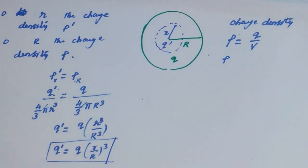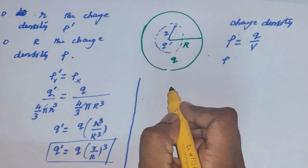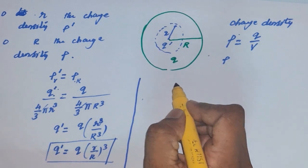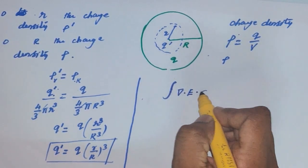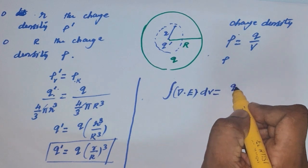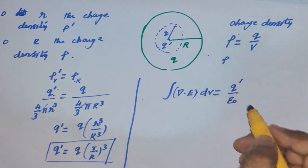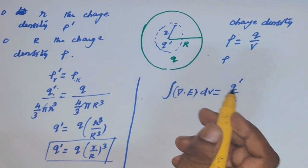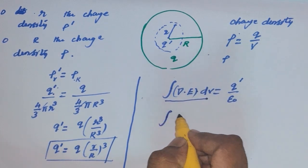Now we can do the problem — what is the electric field at radius small r from the center? We are going to use Gauss's law. The Gauss's law states that in integral form, the integral of del·E dV equals the total charge enclosed divided by epsilon. Using the Gauss divergence theorem, this becomes the integral of E·dS.